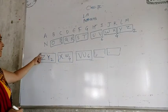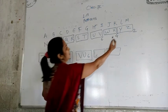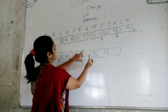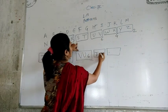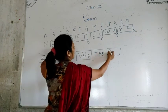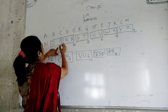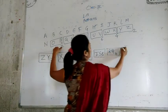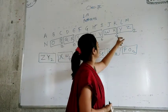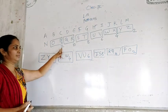The next pattern goes in reverse with numbers: Z and Y is 2, X and W is 4, V and U is 6, T and S is 8, R and Q is 10, P and O is 12. This follows the table of 2: 2, 4, 6, 8, 10, 12.